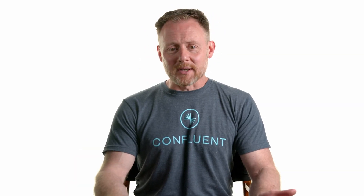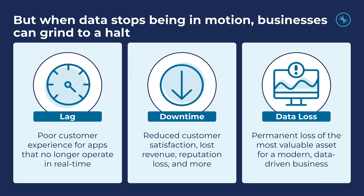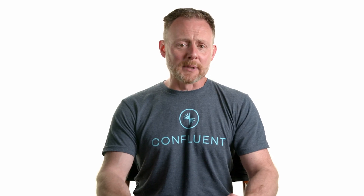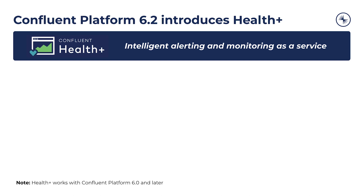What happens if we don't do this? Bad things. When mission-critical processes and applications fail, the business notices and not in a good way. Mitigating the risk of business disruption is critical for you and the systems you build to be able to compete, and maybe even innovate and win in the event-first digital world. With the release of Confluent Platform 6.2, we're introducing a feature called Health Plus. This provides the tools and visibility needed to ensure the health of your environment and minimize business disruption.